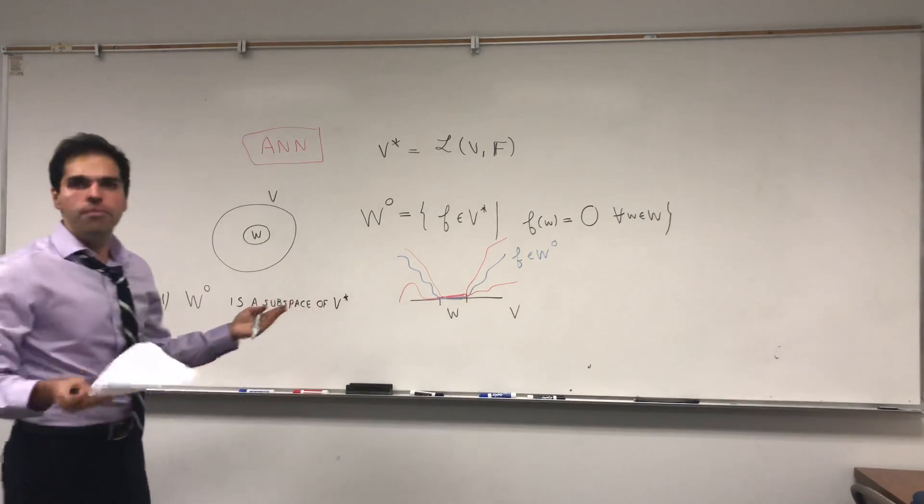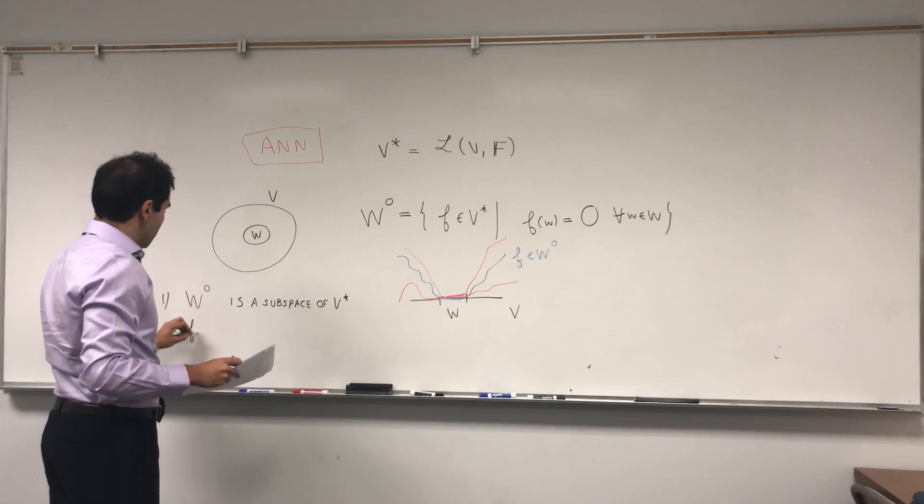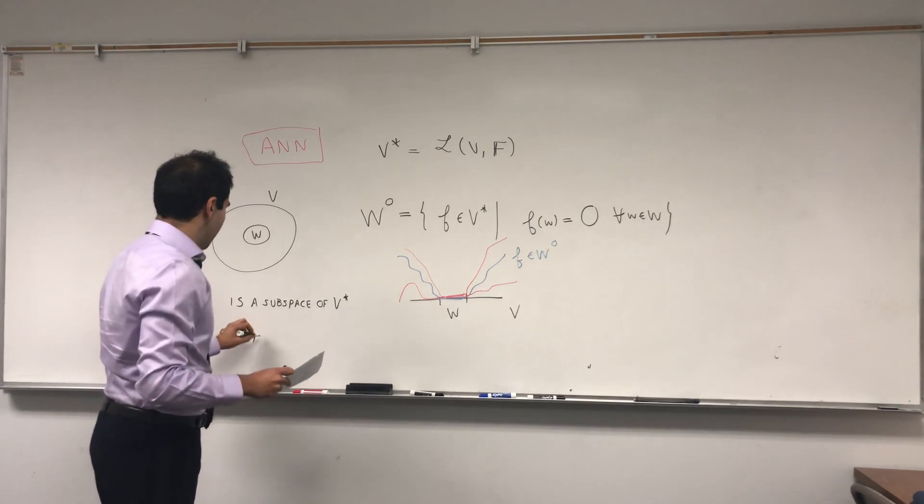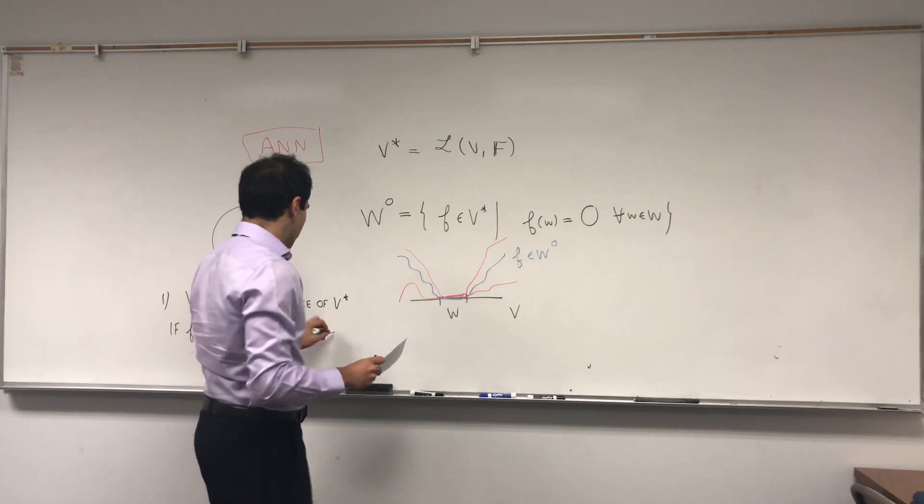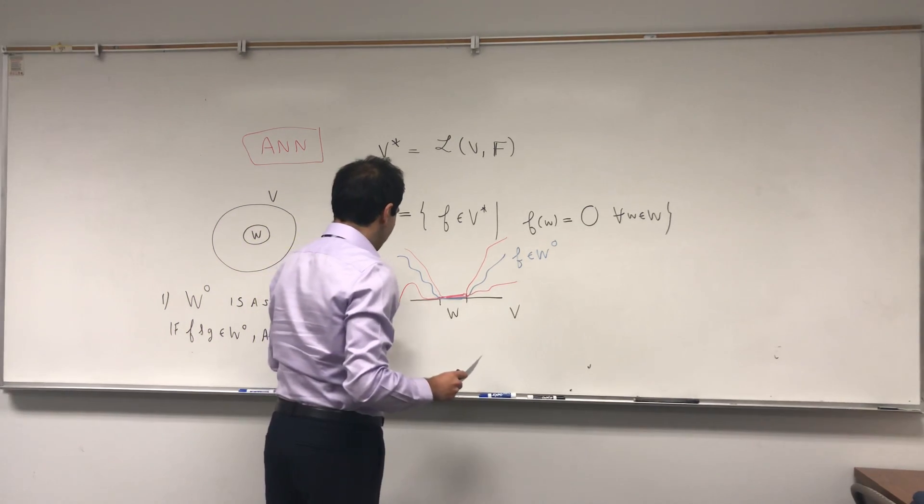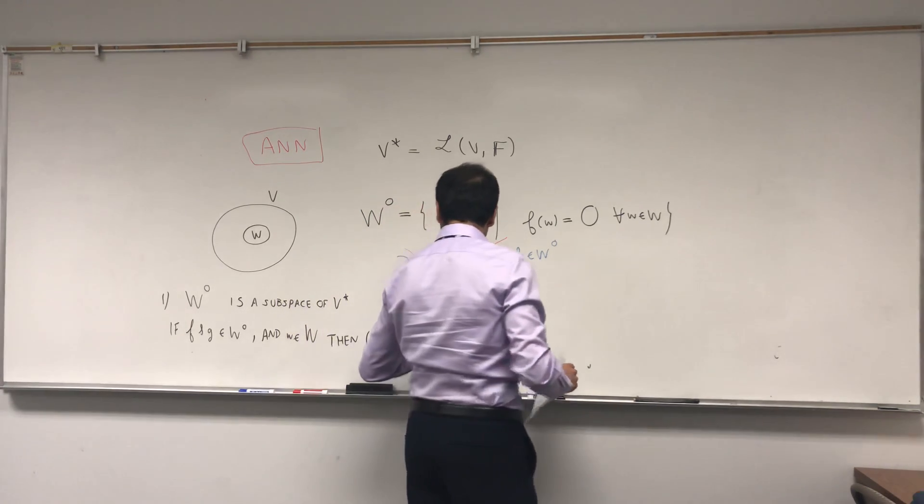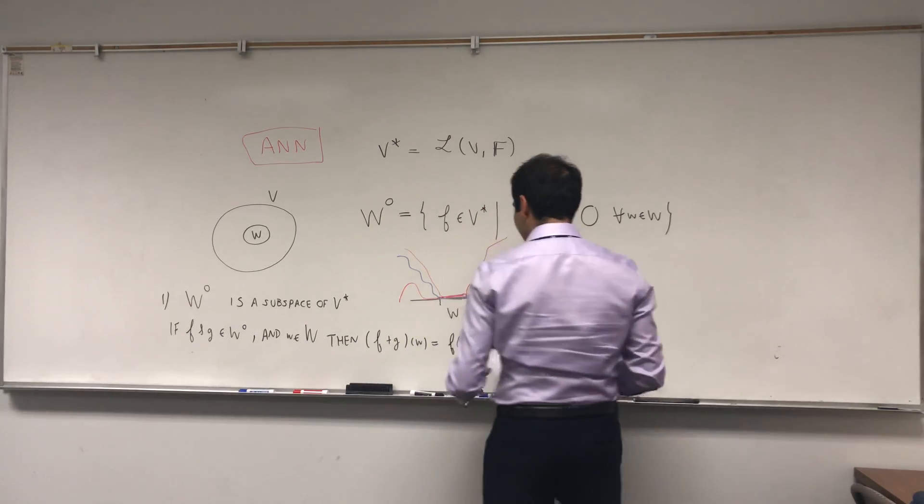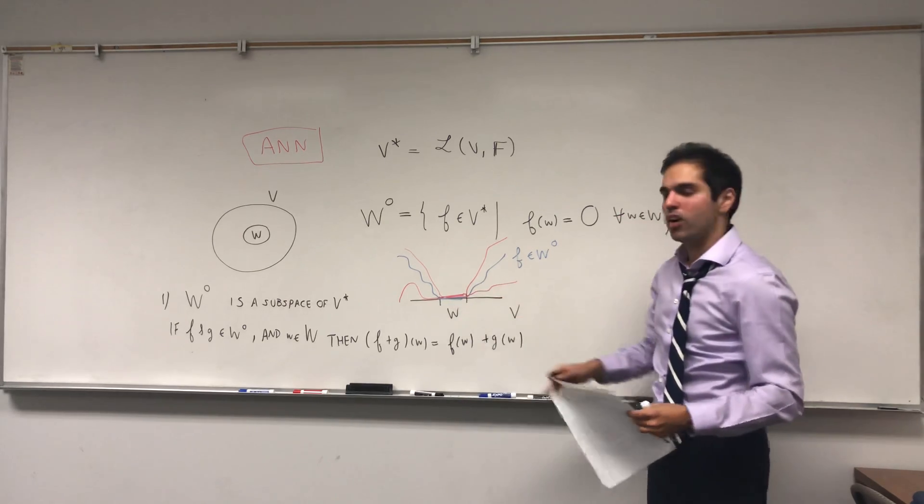And for example, let me show that it's closed under addition. So if F and G are in W naught, and w is an arbitrary vector in W, then let's calculate F plus G of w. Well, that's F(w) plus G(w), but you see, by assumption, F and G are zero on W.